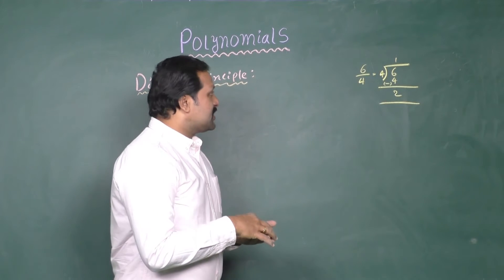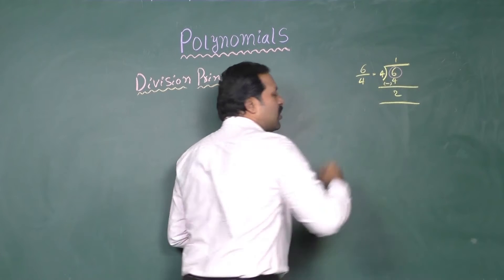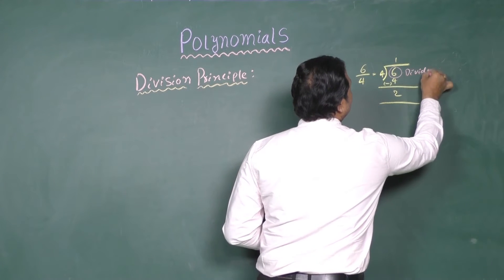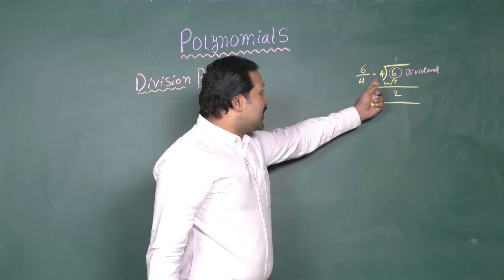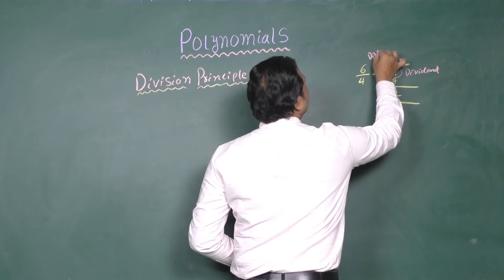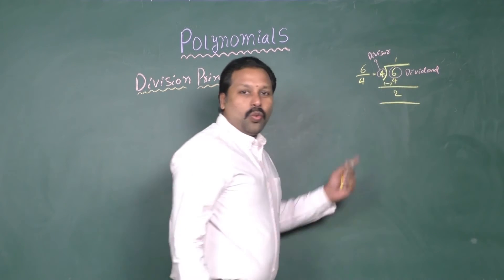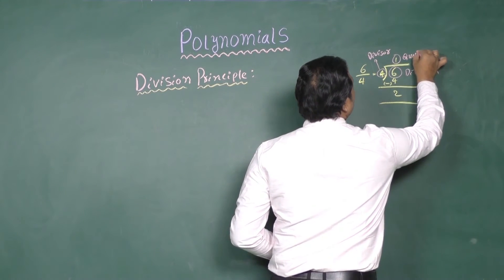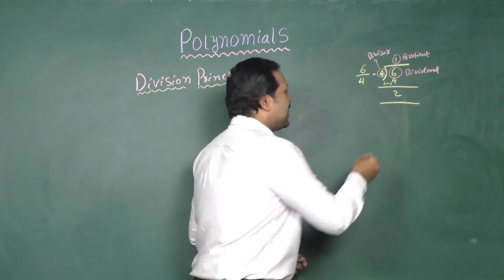In this division, 6 is called Dividend, 4 is called Divisor, 1 is called Quotient, and 2 is called Remainder.